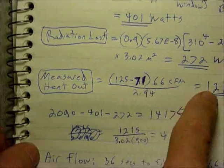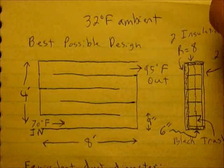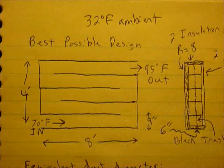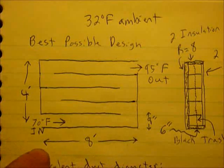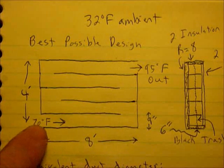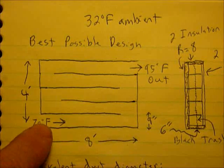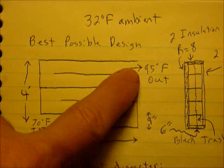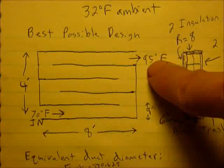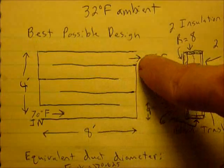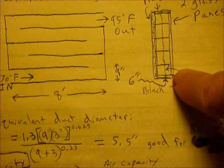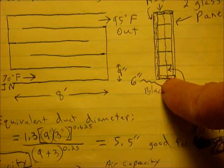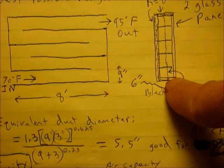Now I'm going to describe what I think will be the best possible design. I'm going to use a four by eight and say the house temperature is 70 degrees Fahrenheit coming in and going out is 95 degrees Fahrenheit, so which means this will have to be very high airflow.